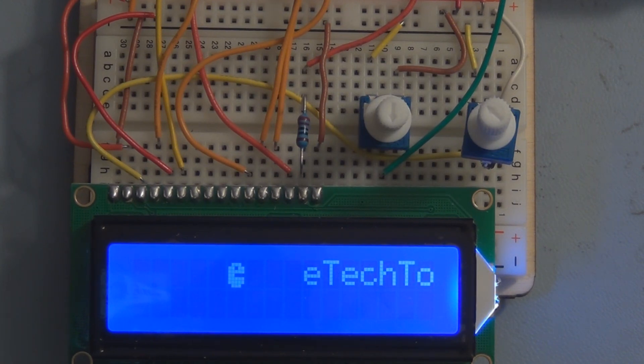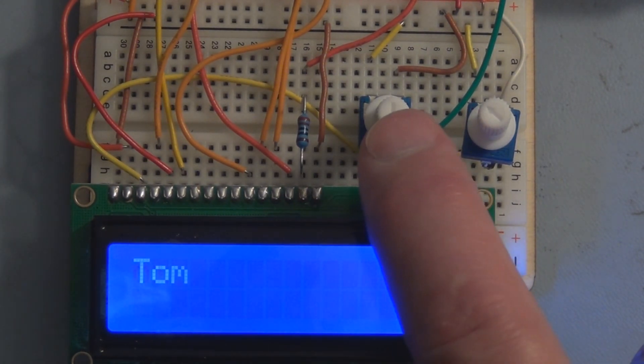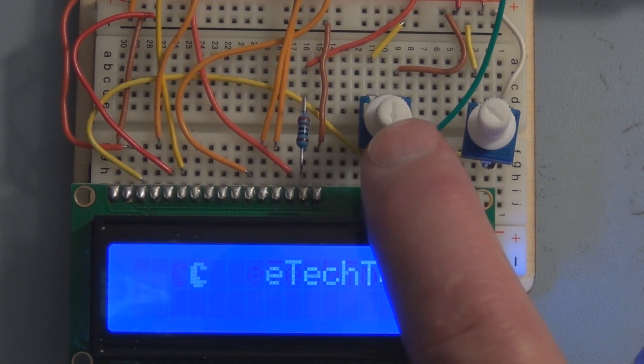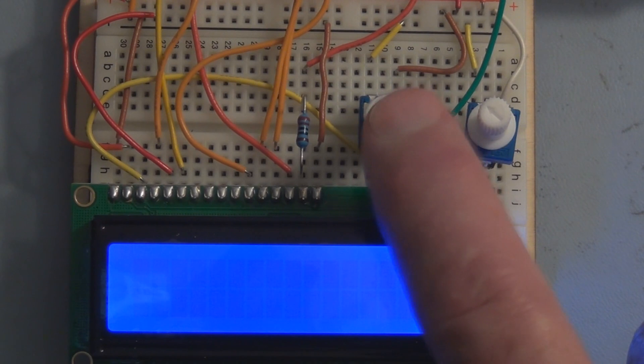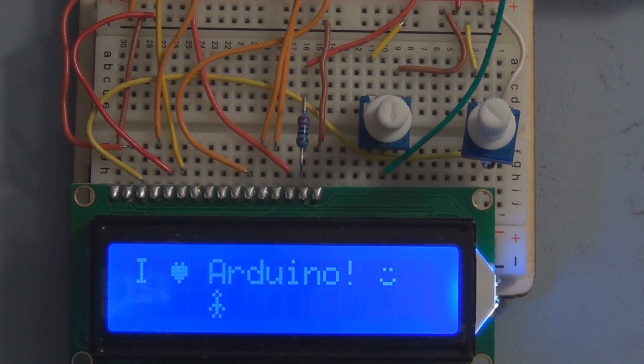So that's just one example of how you can create a custom character with the create character function. I don't know if you notice there's an extra potentiometer here and that's for use with an example custom character program that comes with the IDE. Let me upload that and show you how we use this extra pot here.